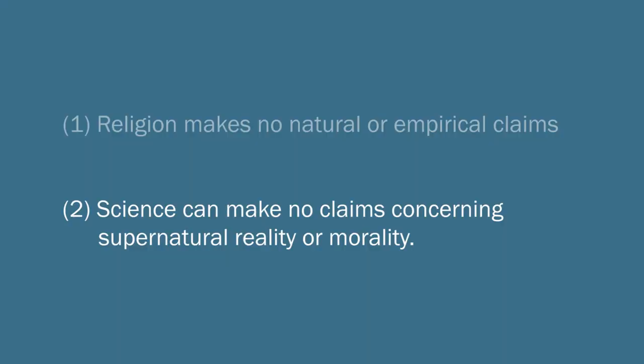So what about the second claim? That second claim that holds that empirical observations or science can't tell us anything about the domain of morality or the supernatural. Is that right? Well, maybe it is, but certainly many people have challenged that claim. So many philosophers and some scientists think, for example, that we can draw inferences about the supernatural from the natural world. And here are two different sorts of examples.